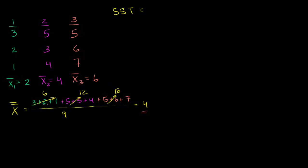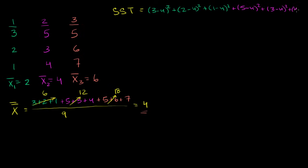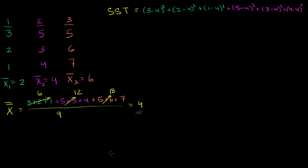Now that we've calculated the grand mean, we can figure out the total sum of squares. It's going to be: (3−4)² + (2−4)² + (1−4)², then (5−4)² + (3−4)² + (4−4)², and finally (5−4)² + (6−4)² + (7−4)².